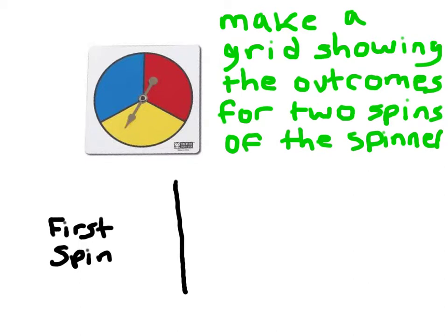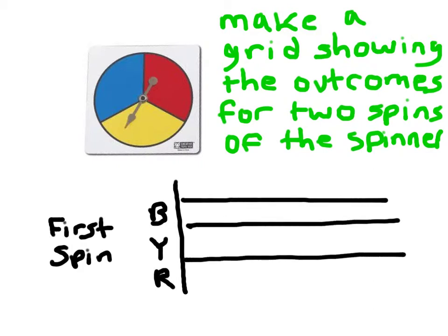And so my rows are going to be the possible outcomes. I could end up with blue, yellow, or even red if I spun the spinner. And that's why I'm going to go ahead and put blue, yellow, and red for those three rows.